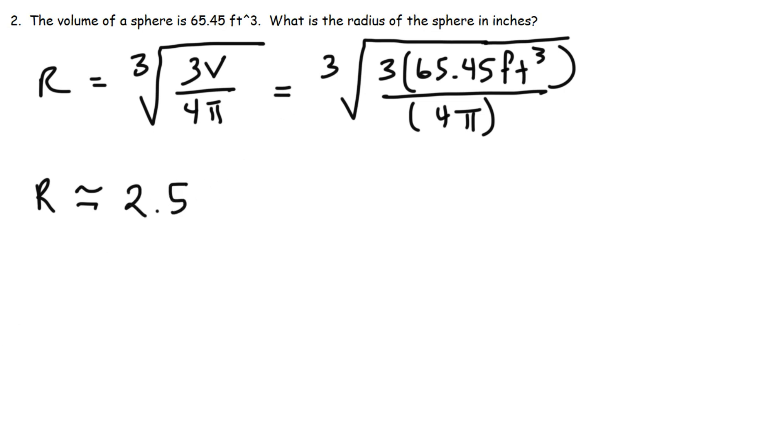Now, notice that we have the cube root of feet cubed. So when you take the cube root, if you take the cube root of feet cubed, the threes will cancel. So you just get the unit feet. This is equivalent to raising this to the 1 third power. 3 times 1 third is just 1. So the radius is just going to be feet, not feet squared or feet cubed.